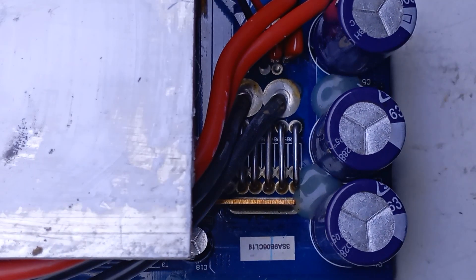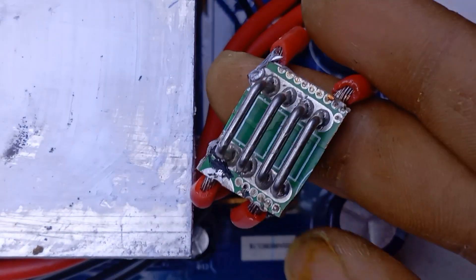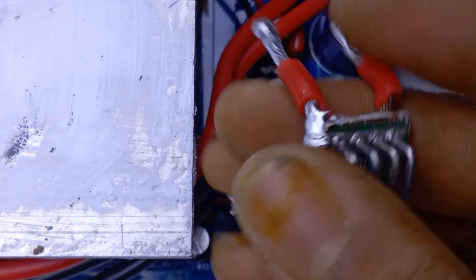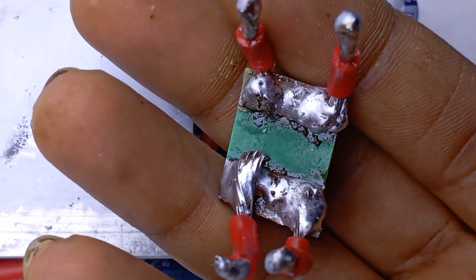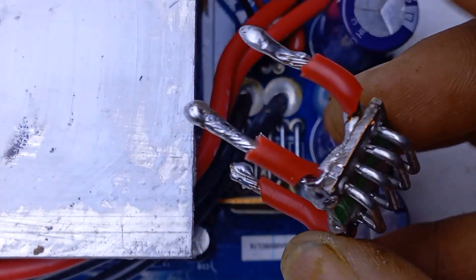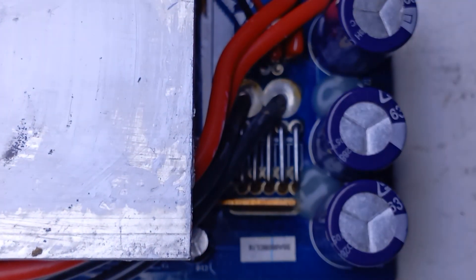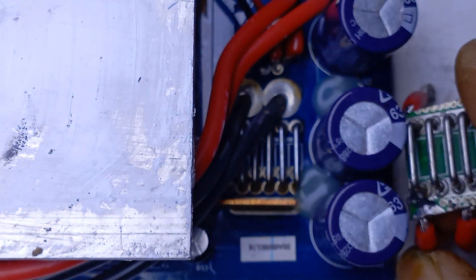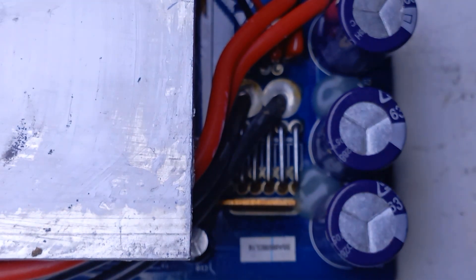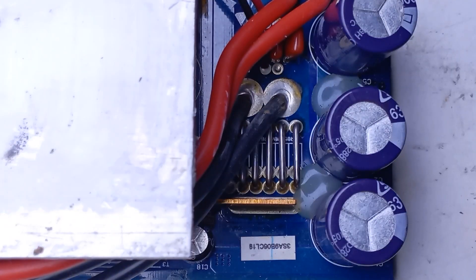Now, here we have another set of shunts from another controller, and I'm going to connect it in parallel with the actual shunt. These shunts are made out of 5 or 6 10-amp shunts connected in parallel. If you can't find a stack like this one, you can order some 10-amp shunts online and connect them in parallel to make a stack like this.